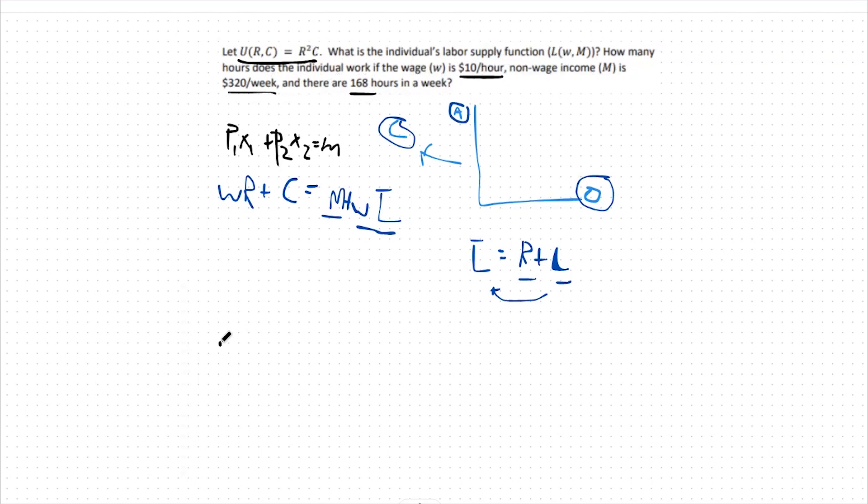So step one, let's analyze our utility function and specifically we're going to take our MRS. Our marginal rate of substitution in this case is going to be our derivative of U with respect to R and our derivative of U with respect to C. This is going to be with respect to R, 2RC. With respect to C it's going to be R squared.